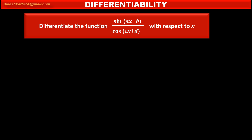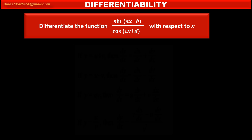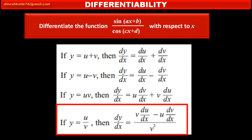To solve such type of problems, we have to use this formula. Since the given function is in the form of u upon v, we can apply the formula: if y is equal to u upon v, then dy/dx is equal to denominator v as it is, into du/dx, derivative of numerator, minus u numerator as it is, into dv/dx, derivative of denominator, upon v square, denominator square.